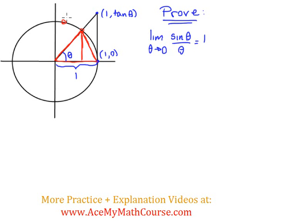Every point on the unit circle will come as (cos θ, sin θ). So it follows that this y-value, or the altitude, will be sin(θ). So the area of the little red triangle will be sin(θ)/2.